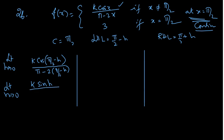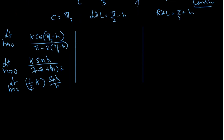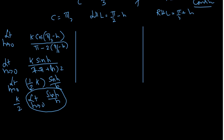In the denominator, 2·(π/2 minus h) gives π minus 2h, so π minus (π minus 2h) equals 2h. So the expression becomes k·sin(h) over 2h. Writing k/2 outside, we have limit h tends to 0 of sin(h)/h. This is a fundamental limit equal to 1. So the LHL answer here is k/2.